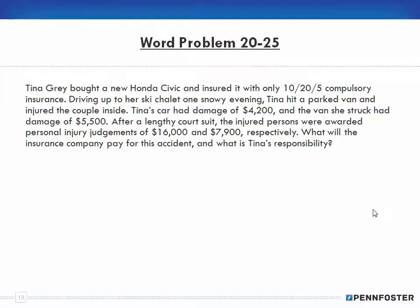Problem 20-25: Tina Gray bought a new Honda Civic and insured it with only $10/20/5 compulsory insurance. Driving up to her ski chalet one snowy evening, Tina hit a parked van and injured a couple inside. Tina's car had damages of $4,200 and the van she struck had damage of $5,500. After a lengthy court suit, the injured persons were awarded personal injury judgments of $16,000 and $7,900, respectively. What will the insurance company pay, and what is Tina's responsibility?